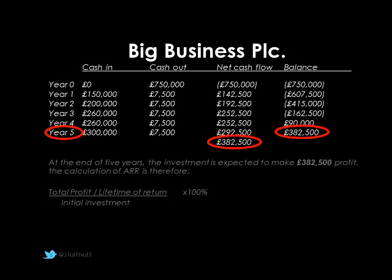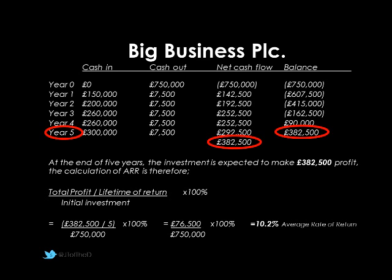The calculation is very straightforward: we take our total profit and divide it by the lifetime of the investment, so £382,500 divided by five. We then take that answer and divide it by the initial investment of £750,000, and multiply by 100% to turn it into a percentage. With the figures substituted in: £382,500 ÷ 5 ÷ £750,000 × 100%, which is the same as £76,500 ÷ £750,000 × 100%, giving an average return of 10.2%. We could then compare this to targets, to other projects, or to performance indicators from the industry.